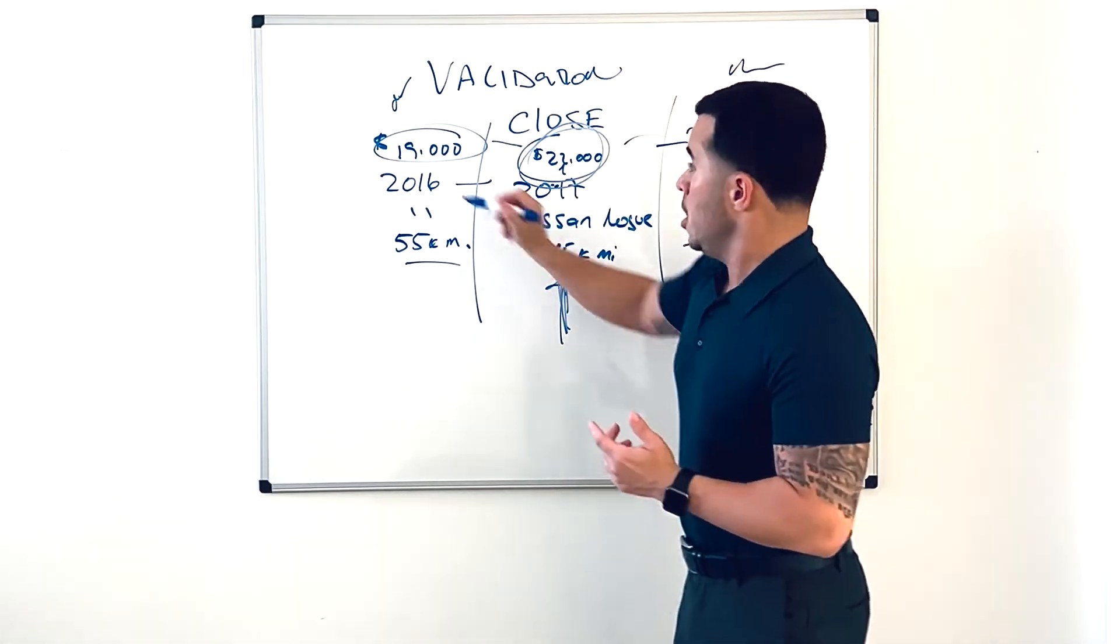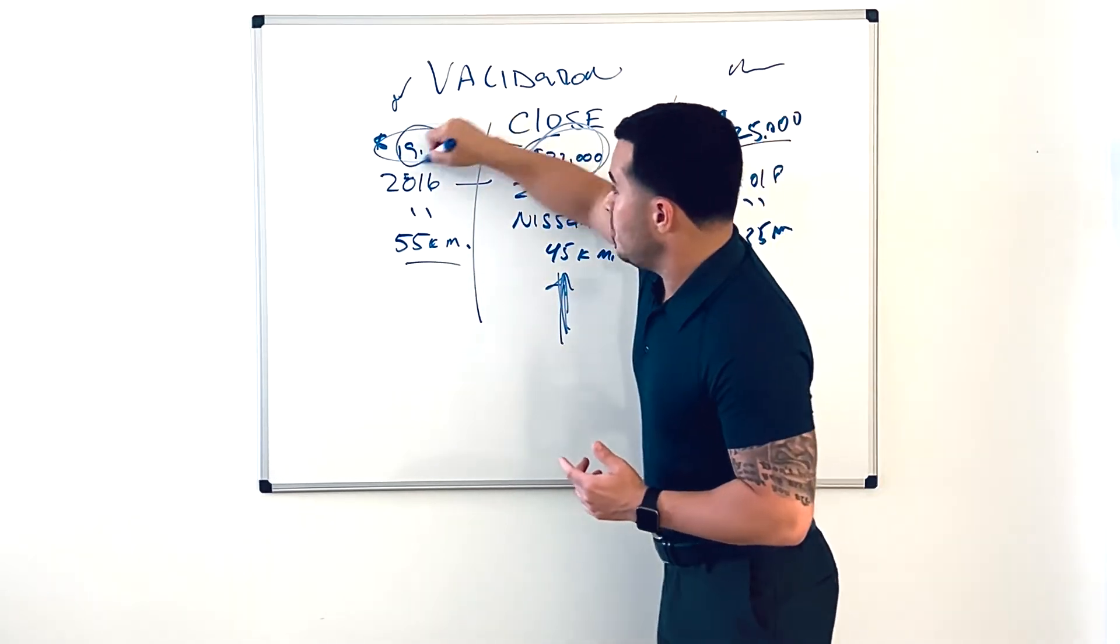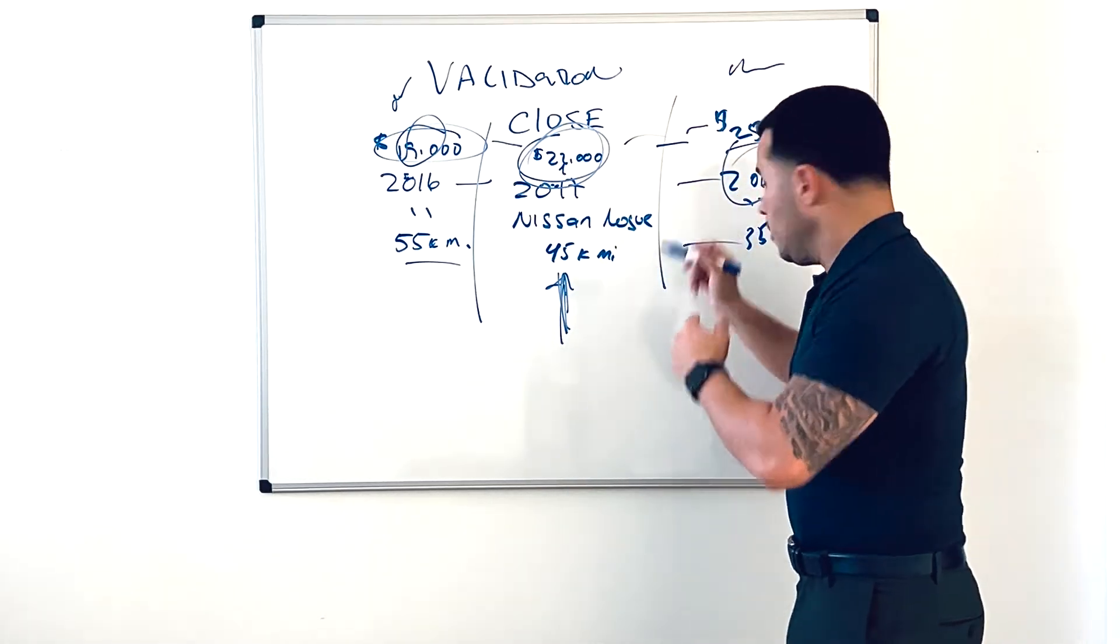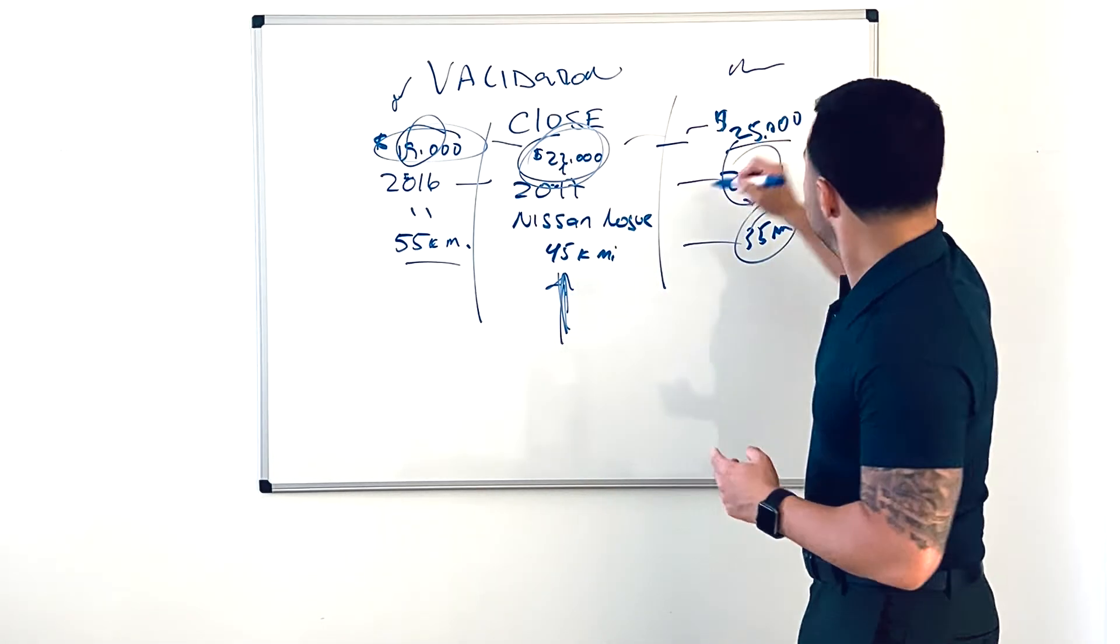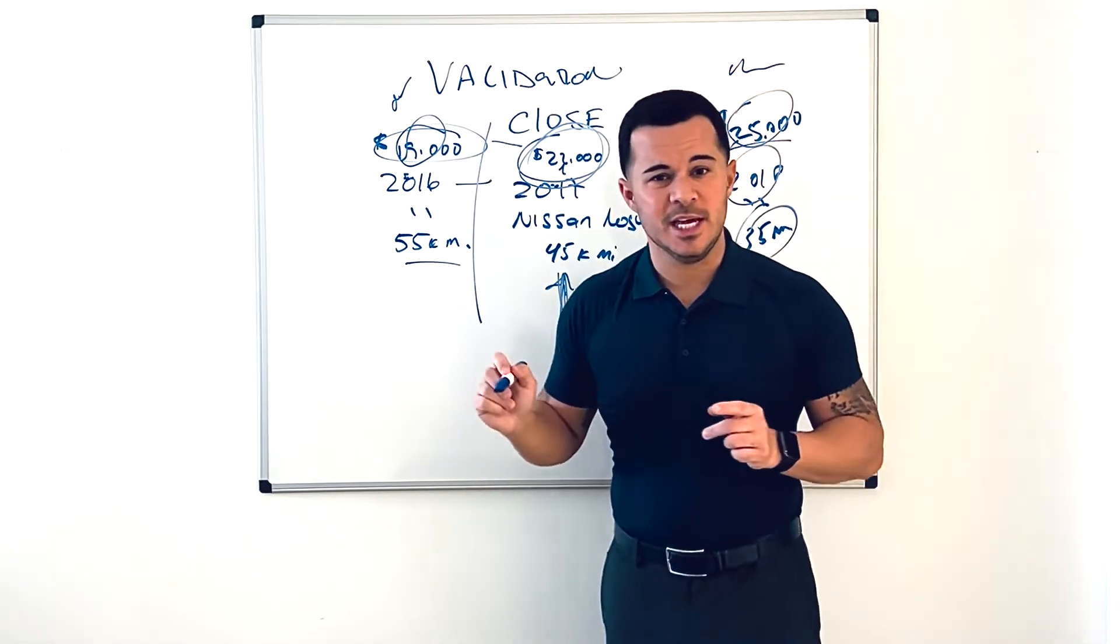It starts to make sense. They can visually see, "Oh okay, so I guess that is the best deal they can get me on the '17, because the '16 that's a year older with 10,000 more miles is $3,000 less, and the '18 that's a year newer with 10,000 less miles is $3,000 more."